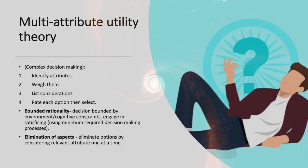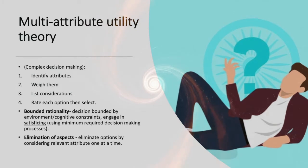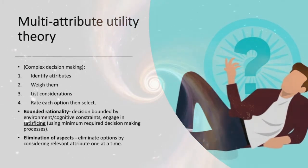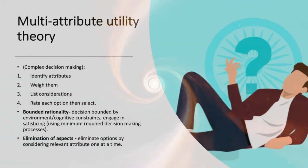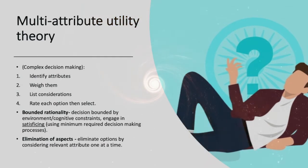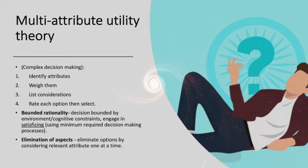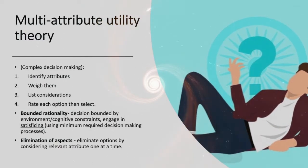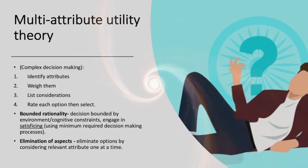Multi-attribute utility theory is a complex decision making process in which individuals identify attributes, weigh them, list considerations, then rate each option and select it. It functions based on bounded rationality, in which the decision is bounded by the environment or cognitive constraints.